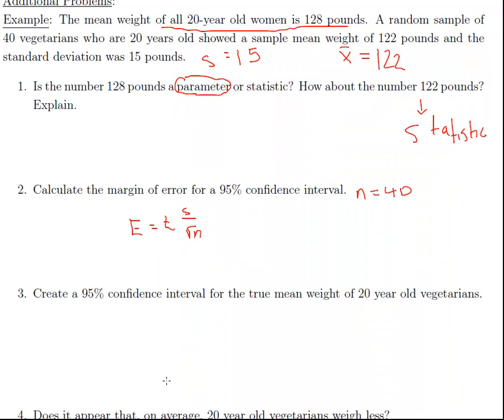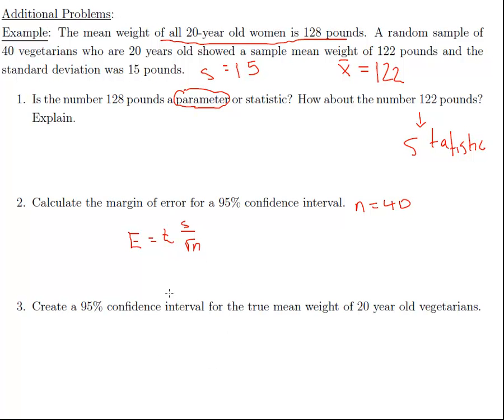Let's go back to the problem here. We have enough information to do that. So 2.042 times s, which is 15, divided by the square root of 40. That gives me 4.84. I'm just going to round to 4.8.